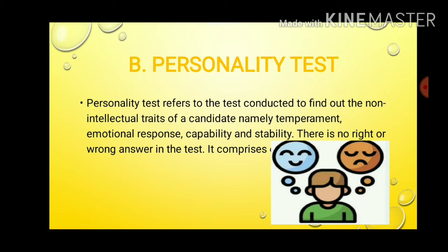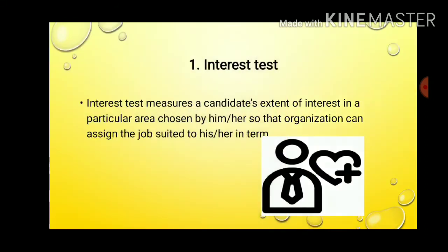The second major category is the personality test. Personality test refers to tests conducted to find out the non-intellectual traits of a candidate, namely temperament, emotional response, capability, and stability. There is no right or wrong answer in this test. It is divided into four types. The first is the interest test, which measures a candidate's extent of interest in a particular area so that the organization can assign a job which suits them.